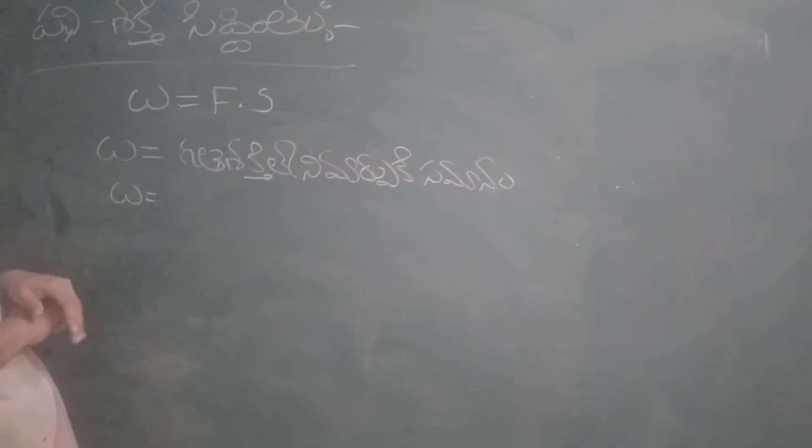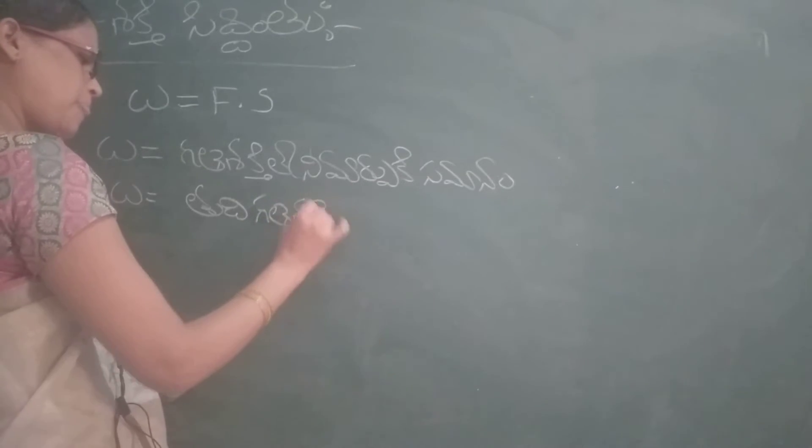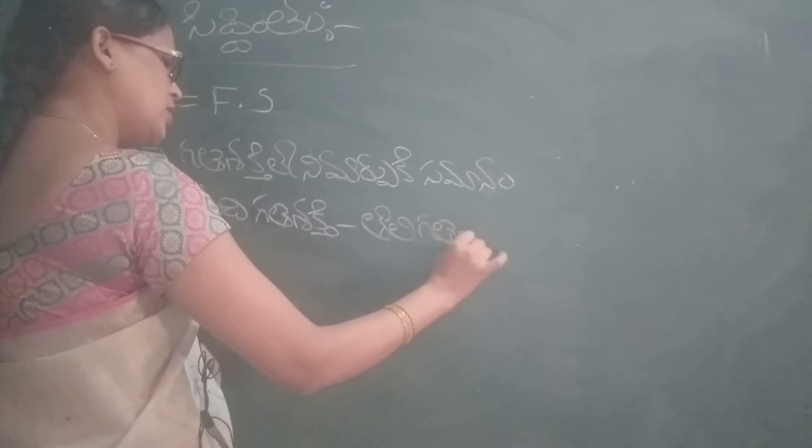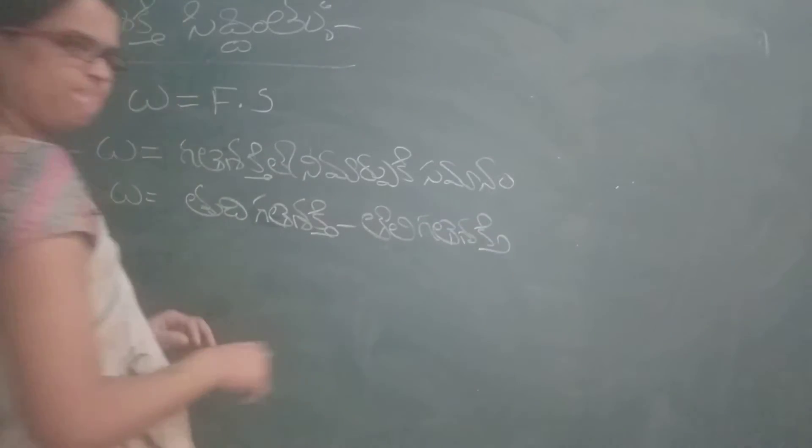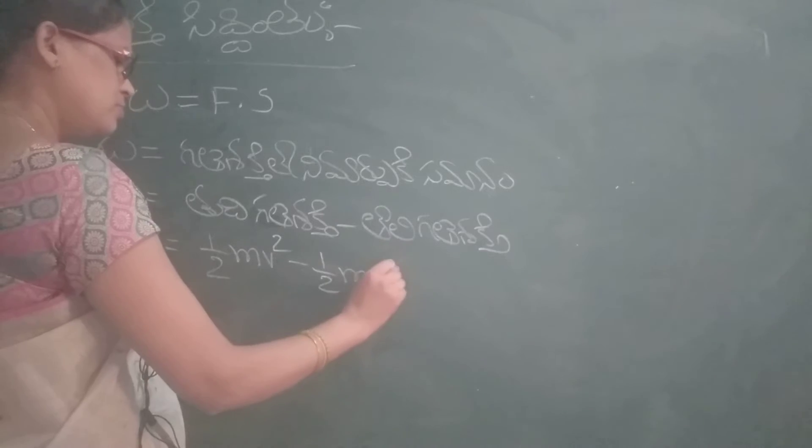W is equal gati shakti lho maartko ki samanam aandde. Tudi, gati shakti minus toli gati shakti. Tudi gati shakti half yam V square. Tudi gati shakti half yam U square.